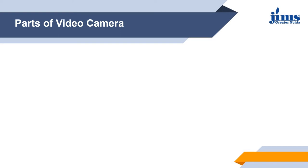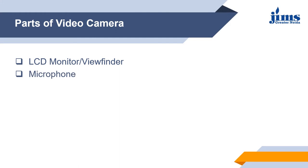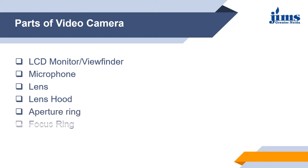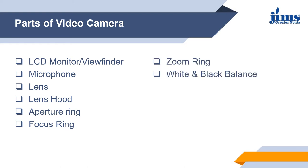Parts of video camera: first is the LCD monitor or viewfinder, microphone, lens, lens hood, aperture ring, focus ring, zoom ring, white and black balance, gain control, on/off button, and auto or manual button.